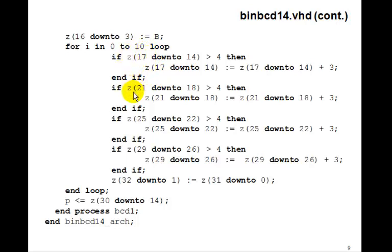And then we check the units, the tens, the hundreds, and the thousands, each time seeing if the units is greater than 4, we add 3. You remember the algorithm. We shift Z one bit to the left. And when you get done, P is going to be 30 down to 14. So, that's going to be binary to BCD 14.